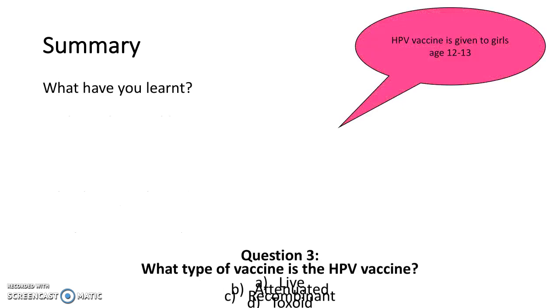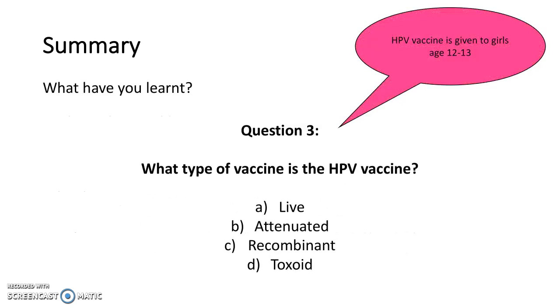The final question is: what type of vaccine is the HPV vaccine? This is given to girls aged 12 to 13. It is a recombinant vaccine, which is option C. Thank you for watching this video. I hope it has been helpful.